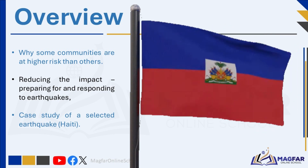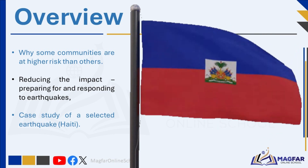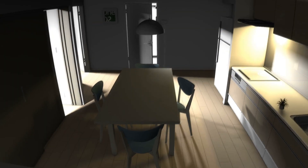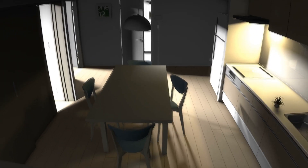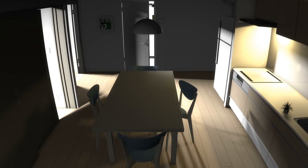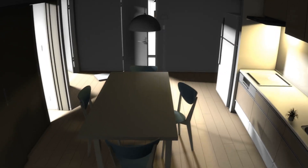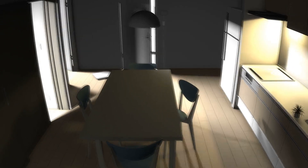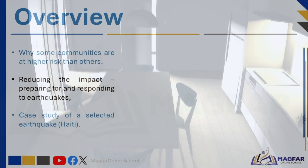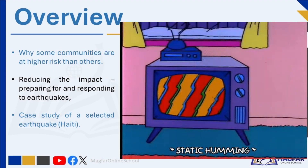As we have seen previously, an earthquake is a sudden and violent shaking of the ground causing great destruction. Earthquakes are a result of movements within the earth's crust, and they occur due to the release of accumulated stress along fault lines.